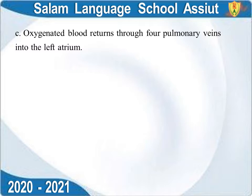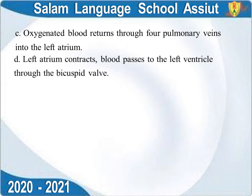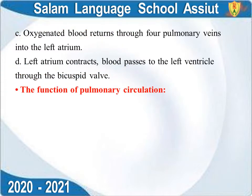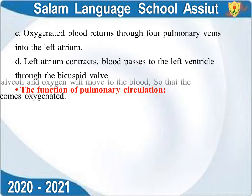Oxygenated blood returns through the four pulmonary veins into the left atrium. We have two lungs and four pulmonary veins, bringing oxygenated blood to the left atrium.